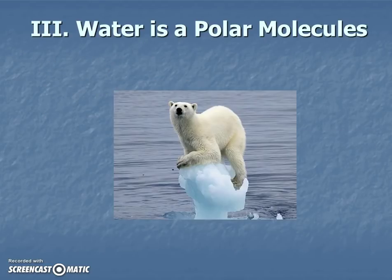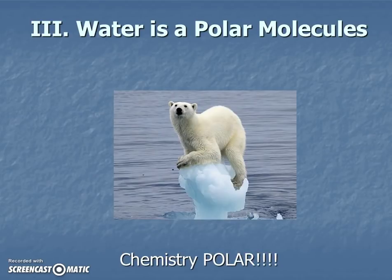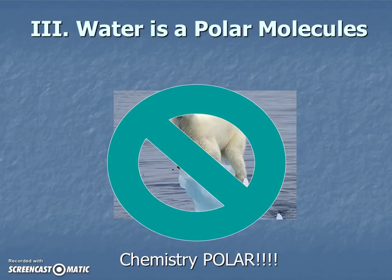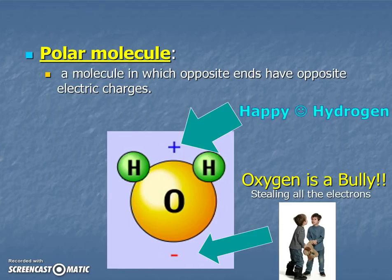And so we call water a polar molecule. Water is a polar molecule. And no, not polar bear. We mean chemistry polar, which is a different thing. So let's define it. It's actually what we were talking about before. A polar molecule is a molecule where opposite ends have opposite electrical charges. Does water molecules seem to be that way? Yeah. Where the hydrogen is positive on one end and the other end is negative.